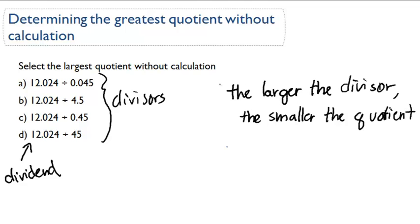So that's if the divisor's larger, the smaller the quotient. The opposite: the smaller the divisor, the larger the quotient.